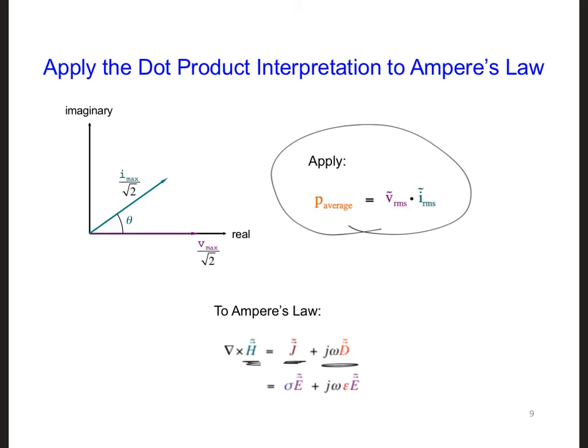If we apply the dot product interpretation to Ampere's law, we can see what causes power dissipation if there's an in-phase component.